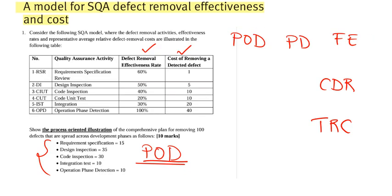Starting with the first stage — requirement specification review — the phase originated defects are 15. Since this is the first step, there are no past defects from any previous phase. The filter effectiveness, given in the table, is 60 percent, meaning 60 percent of defects can be removed at this stage.